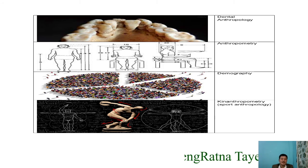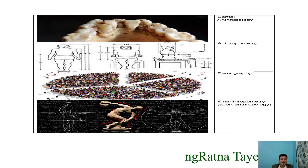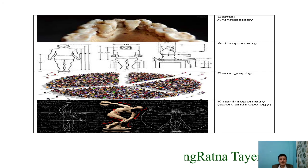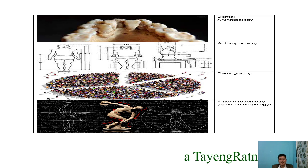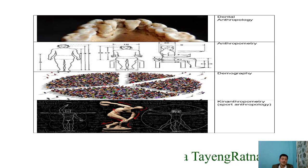Then we have anthropometry, the science of measurement. Anthropometry plays an extensive role in industrial design, clothing design, defense equipment, ergonomics, and architecture. Then we have demography, the scientific study of human population, growth rate, density, vital statistics, and distributions of human population. And last but not least, we have kinanthropometry, also called sport anthropology. It is a comparatively new science concerned with the measurement of the body and other parts of the human body so as to see higher levels of performance in a specific sport.